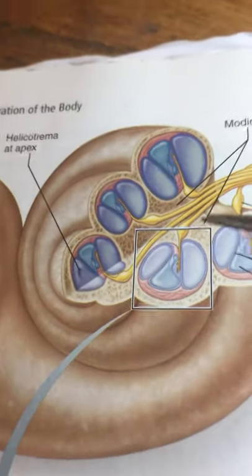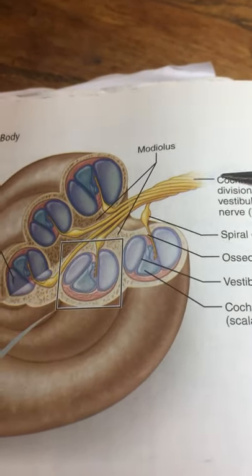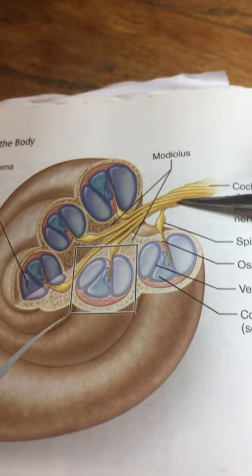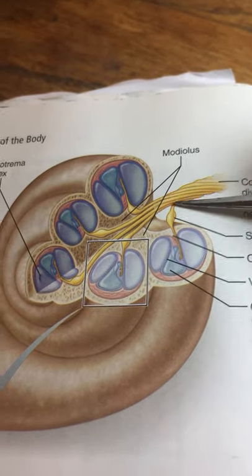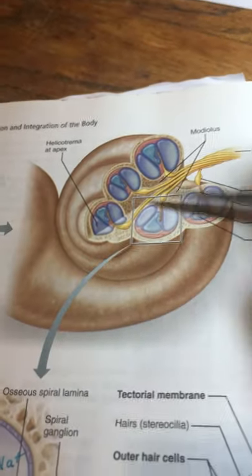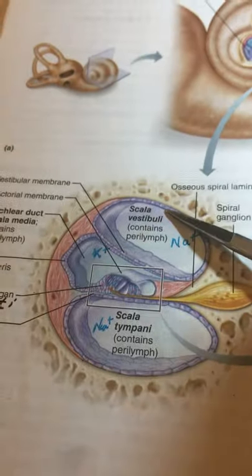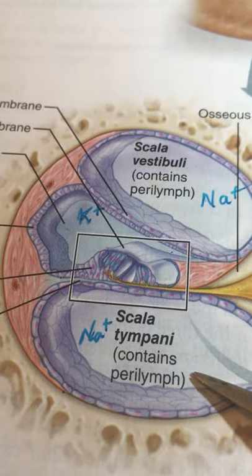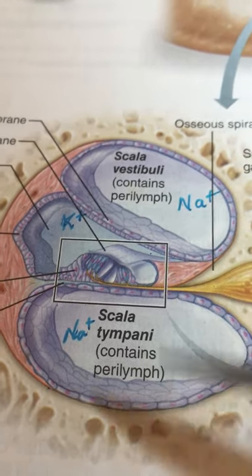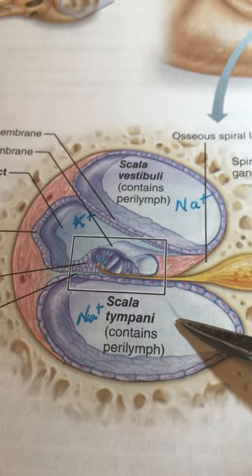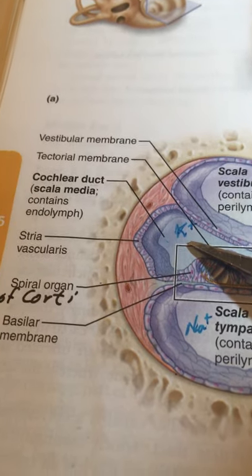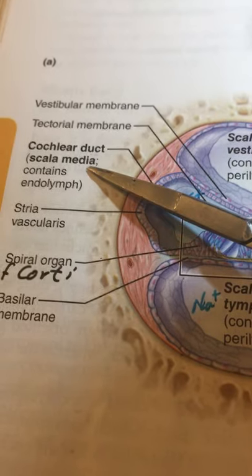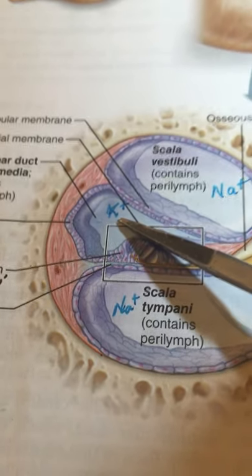Now we move into the realm of hearing. Here we have the cochlear nerve, which is a portion of the vestibulocochlear cranial nerve 8 — just the cochlear portion. Looking at one single turn of the snail shell cut through, above we notice a tube called the scala vestibuli, and below a tube called the scala tympani. These are actually connected to one another at the very end. In between is the scala media, also called the cochlear duct, filled with potassium-rich endolymph.